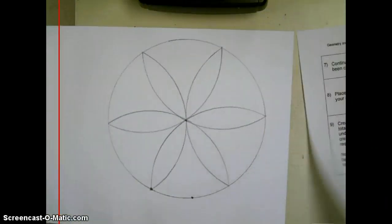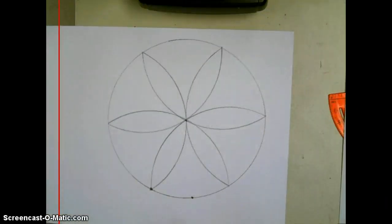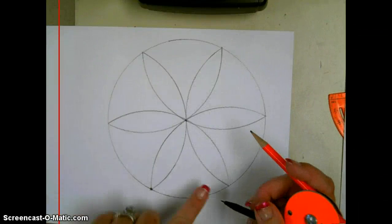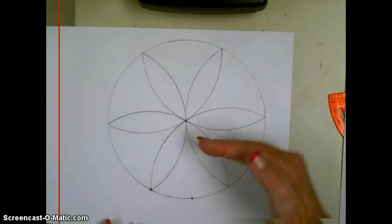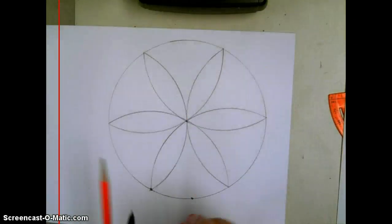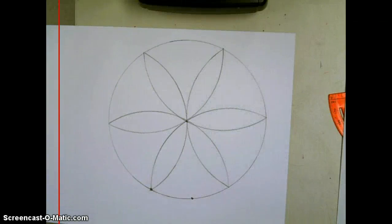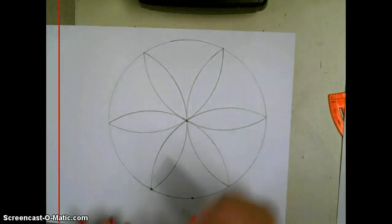This will become your new point to create the same set of arcs, so that you will have six more petals in the middle of these existing six petals. You'll have a total of twelve petals.